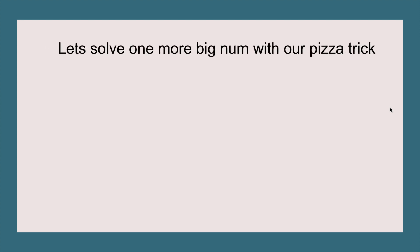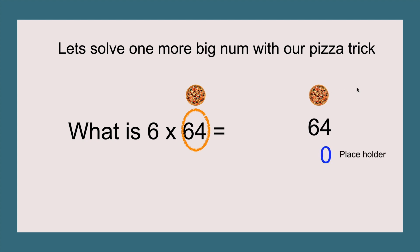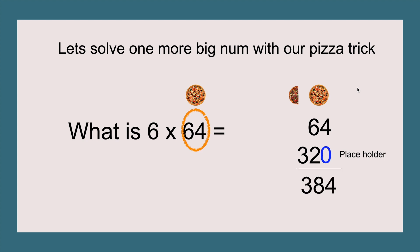Let's solve one more big number with our pizza trick — this is going to be our last one. What is six times sixty-four? I'm going to circle the sixty-four and put it right there. We're going to add our placeholder of zero. Half of sixty-four is thirty-two, so that makes three hundred and twenty. Sixty-four plus three hundred and twenty equals three hundred and eighty-four. Three hundred and eighty-four is our answer, and six times sixty-four equals three hundred and eighty-four.